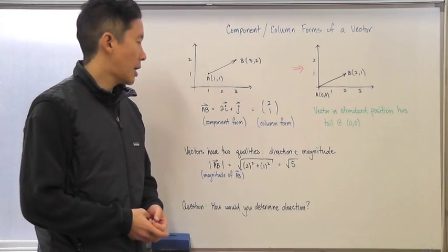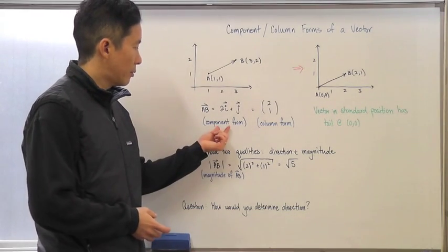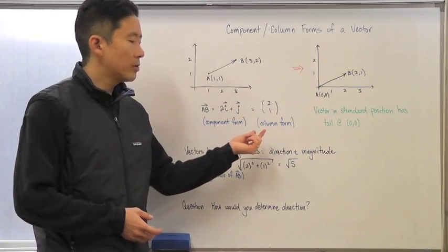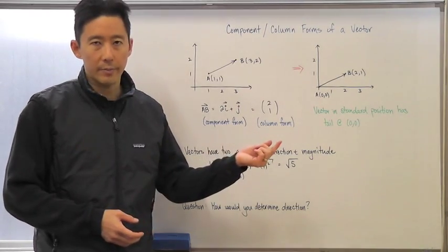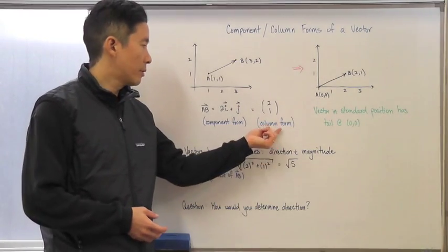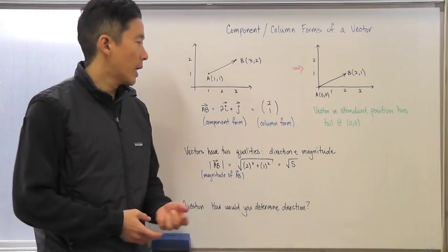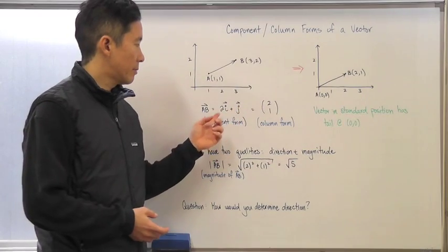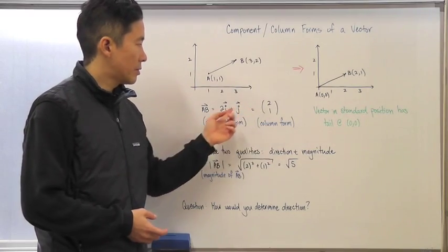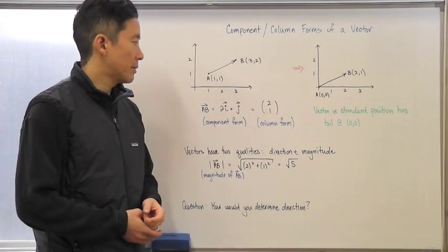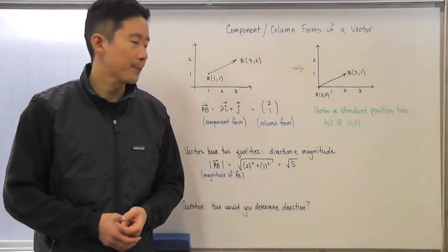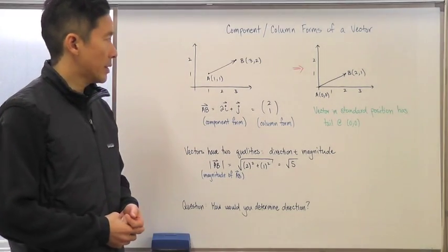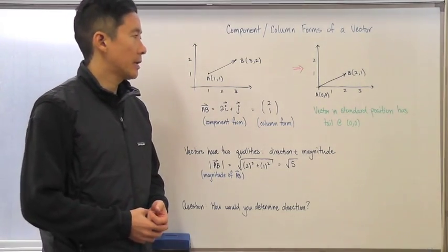We can also go ahead and change this component form into a more user-friendly form called the column form. It will be very obvious how these two forms relate to one another.